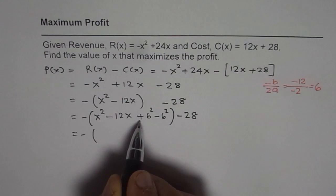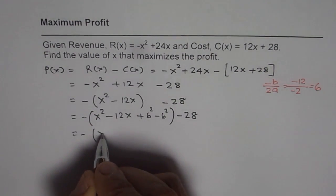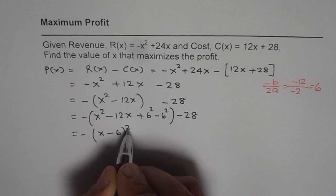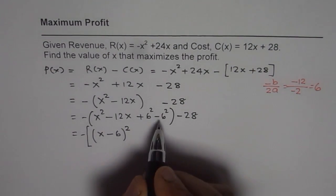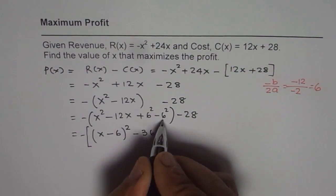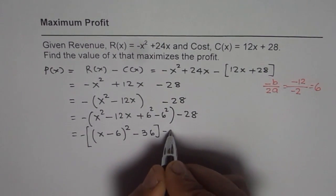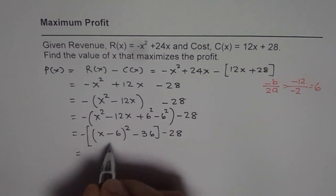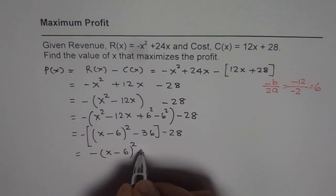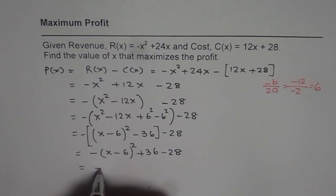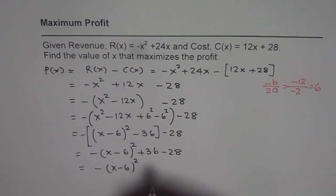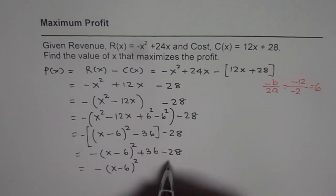That gives us one perfect square which is (x - 6)². Let me write a square bracket here because minus is for both the terms. And then we have -36 which is -6² - 28. And that, let's open the bracket, gives us -(x - 6)² + 36 - 28.